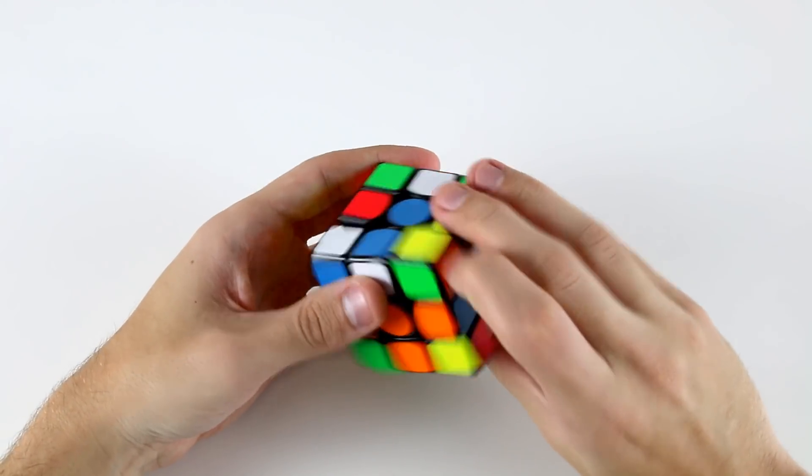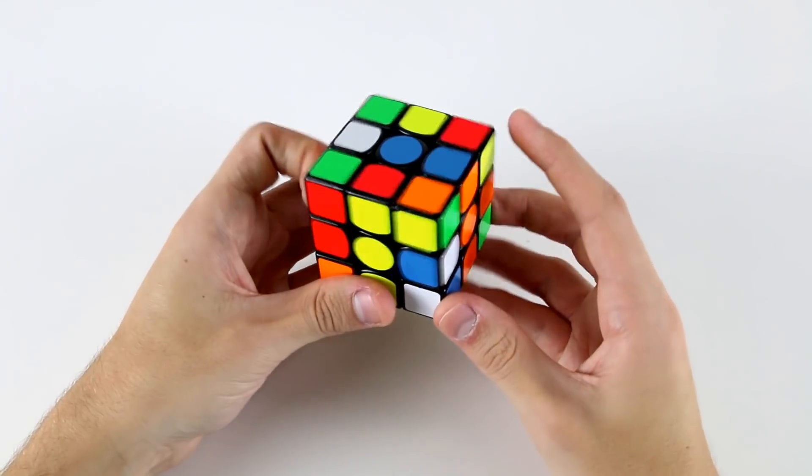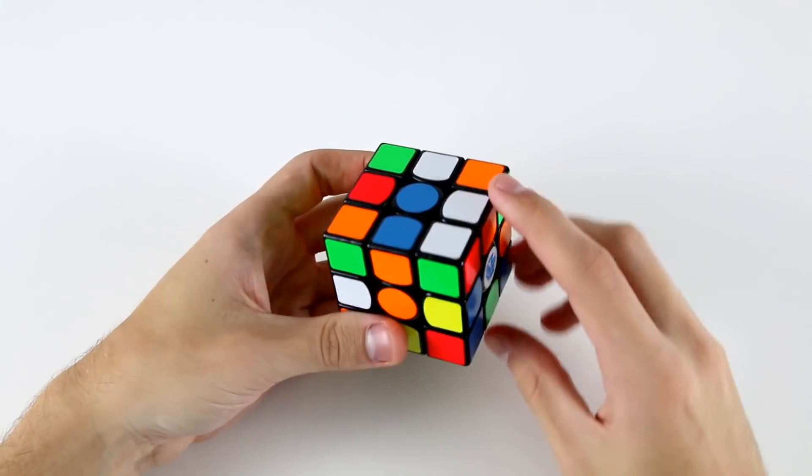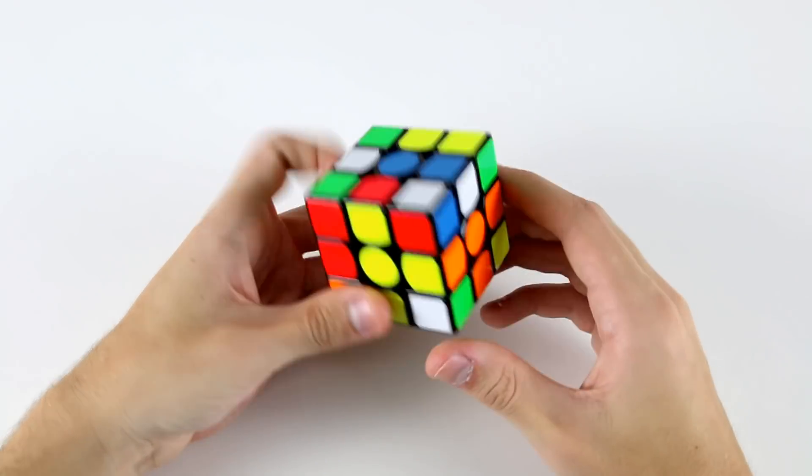Then instead of doing a d' f, I can do like a wide u' r. So the last three moves of that cross are r, wide u' r, like that.